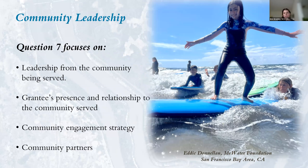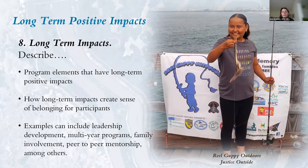Question seven asks how your organization builds and fosters connections with the community served through partnerships and leadership roles. For example, individuals from the communities being served are involved in the project's management, development, or implementation. Question eight asks you to describe how the program is designed to have long-term positive impacts on participants — including leadership development, multi-year programs, family involvement, peer-to-peer mentorship, and multi-touch experiences.